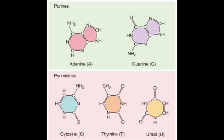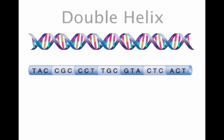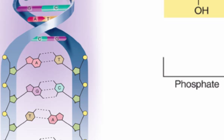This is why DNA presents itself as two strands facing each other. The hydrogen bonding causes a spiral staircase appearance called the double helix. Since adenine and thymine have the ability to form two hydrogen bonds, they will only bond to one another.